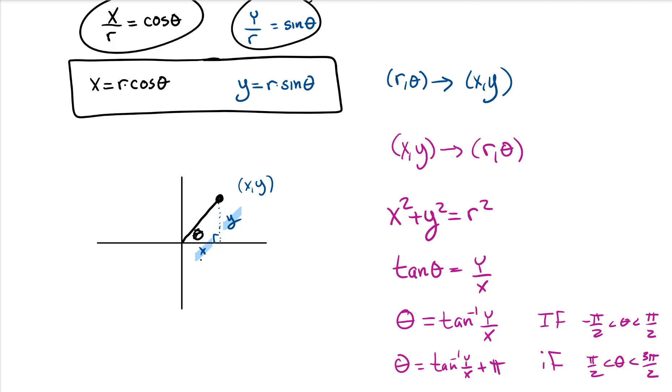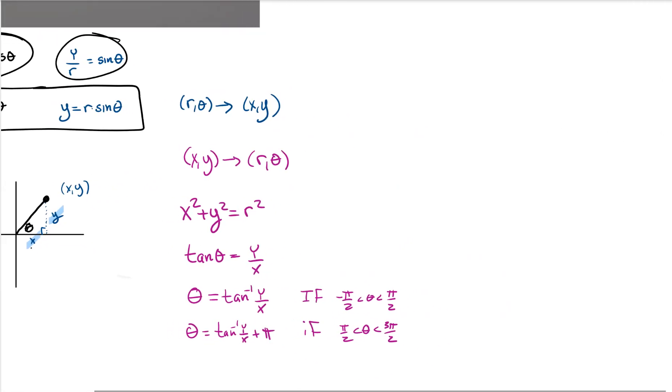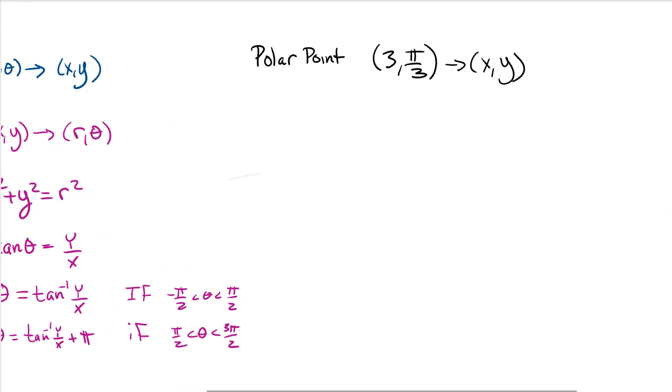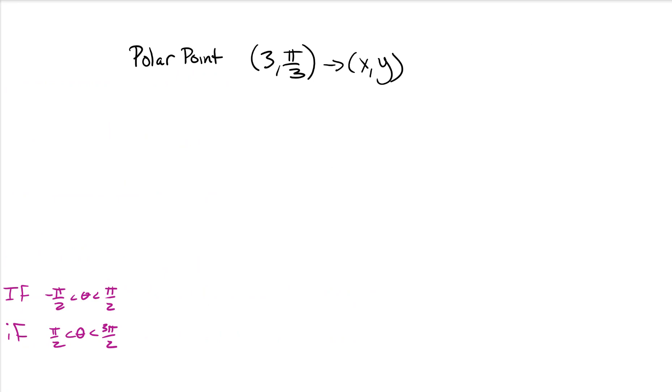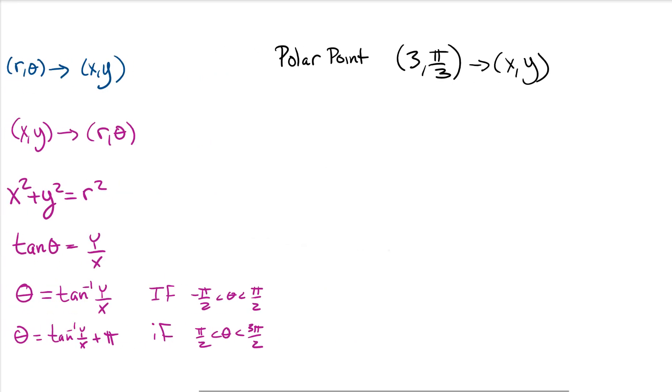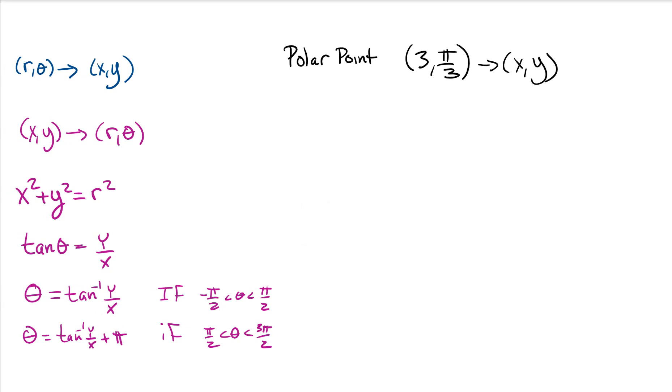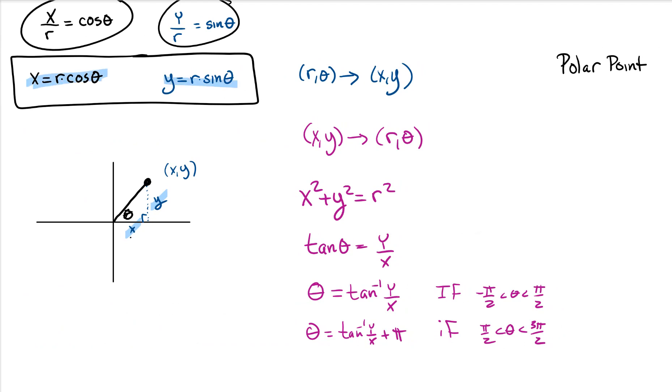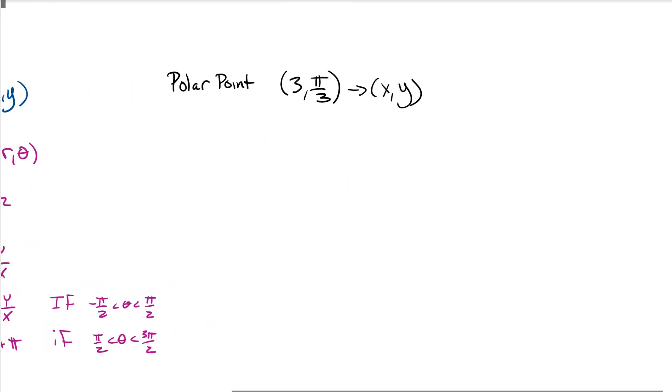But let's wait on this for a second. Let's go into some problems. Let's see that it's not that bad. Let's go this way. Let's take a polar point. Let's call it 3 comma pi over 3, and we want to convert it into x's and y's. We'll start with points, but we're doing this so we can start to convert into equations. Well, our formula says if you want to convert, x equals r cosine and y equals r sine.